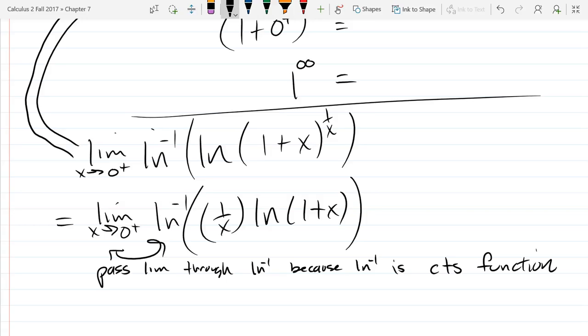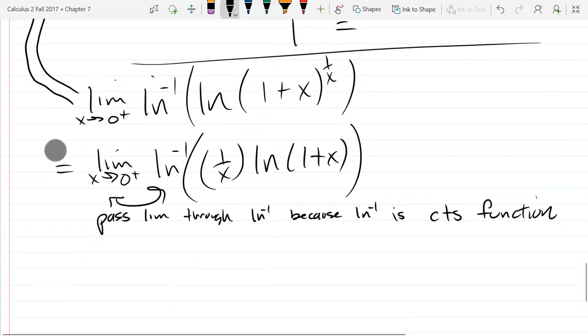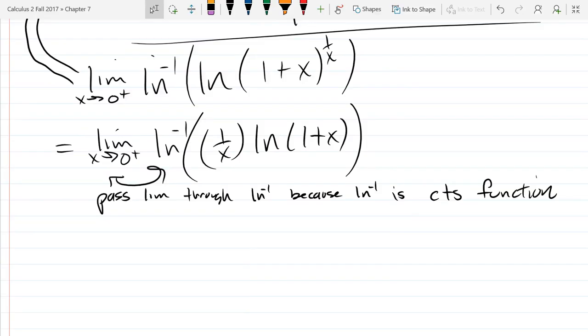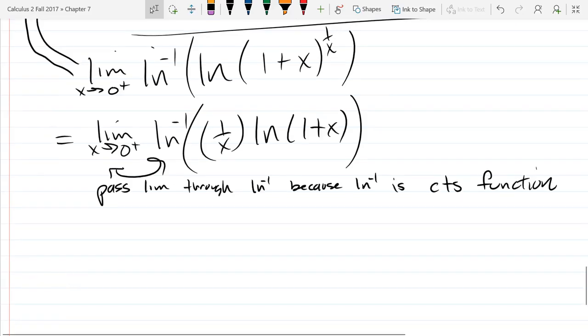And remember, you can pass the limit through any continuous function. Most of the functions we're going to deal with are continuous, so you can pass the limit through most of the functions that we deal with. The only time you really don't want to do it is if that x value would be a vertical asymptote. And then things get totally weird, so you can't pass it through if you don't have a continuous function at that point. All right, so we're going to pass the limit through.